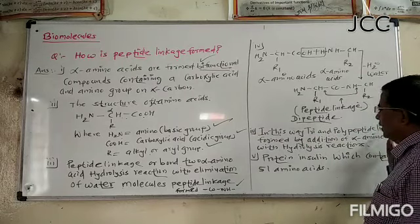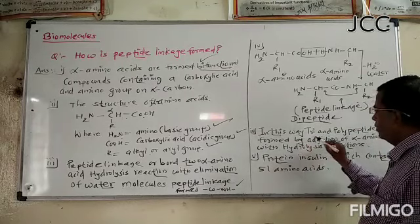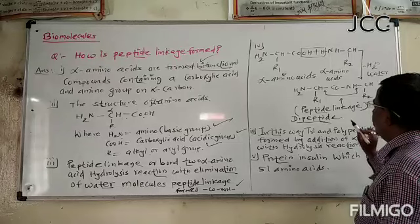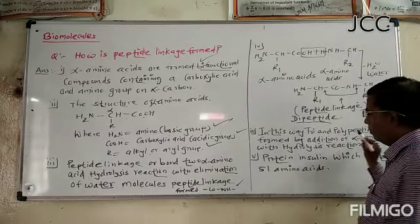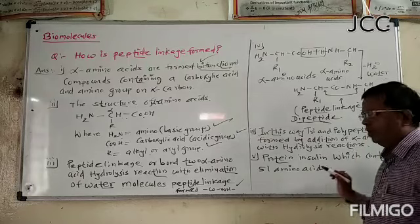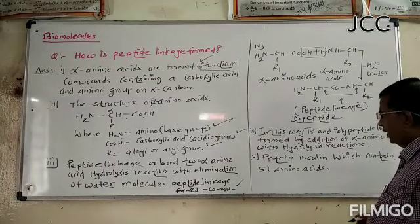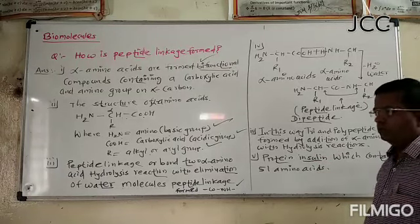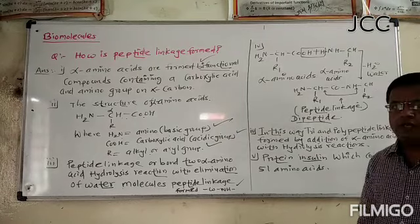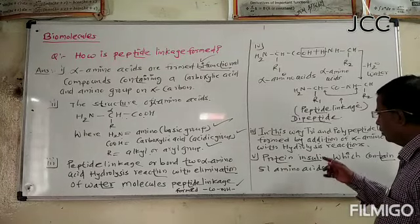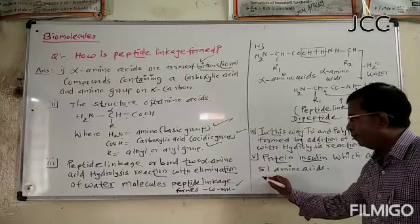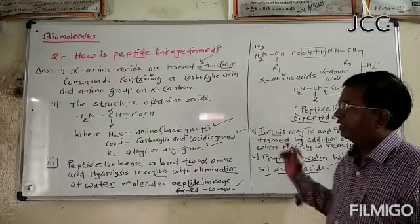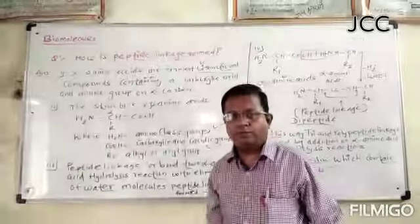In this way, the polypeptide linkage is formed by addition of alpha amino acids. In biochemistry, insulin is a main molecule formed in the human body to control sugar levels in the blood. Insulin contains 51 amino acids. Protein molecules are formed with polypeptide linkages.